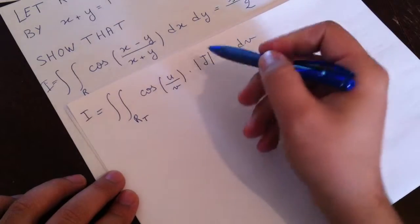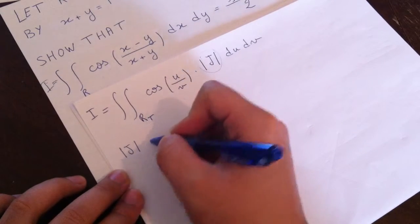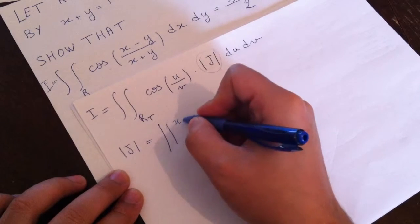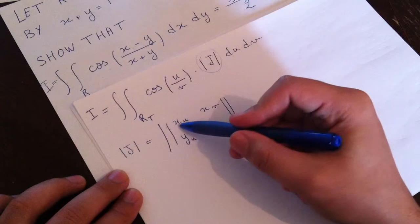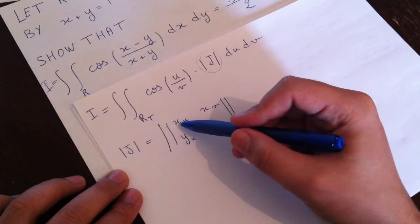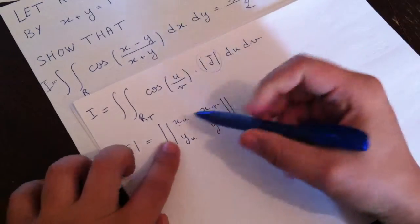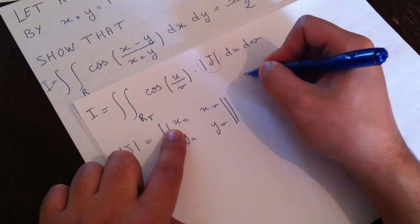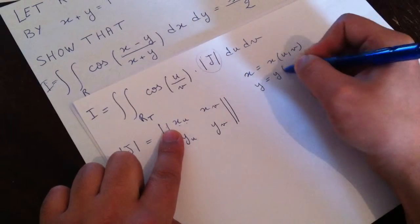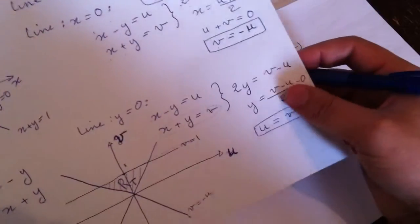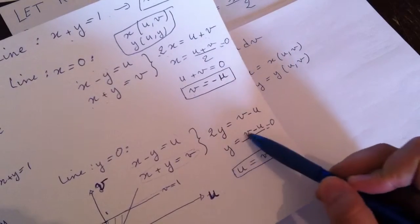To do this, we first have to find the modulus of the Jacobian, which is equal to the modulus of the determinant with entries x_u, x_v, y_u, y_v. Here we need x as a function of u and v, and y as a function of u and v as well. We found before that x is equal to (u plus v) over 2, and y is equal to (v minus u) over 2.